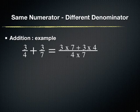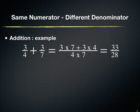As shown in the below diagram, the numerator is the addition of 3 multiplied by 7 and 3 multiplied by 4. The denominator is 4 multiplied by 7. Hence, the addition of the fractions is 33 upon 28.